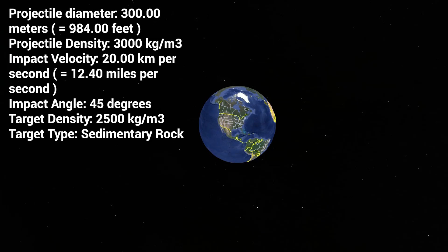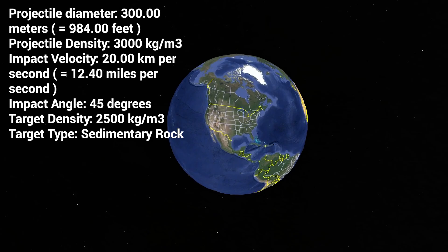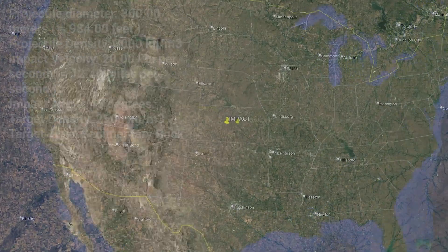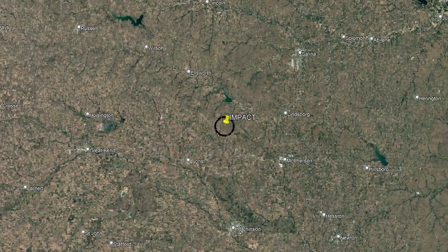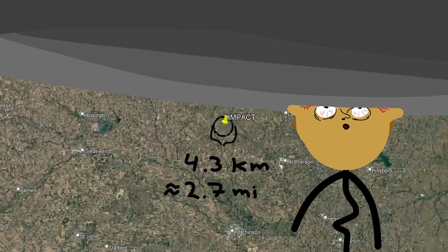Let's assume a few likely parameters of the asteroid, like density and angle of impact. The impact is Kansas, right in the center of the United States. The crater diameter is only 4.3 kilometers, and if you're unlucky to be right under it, well, yeah, you'd be crushed, obviously.